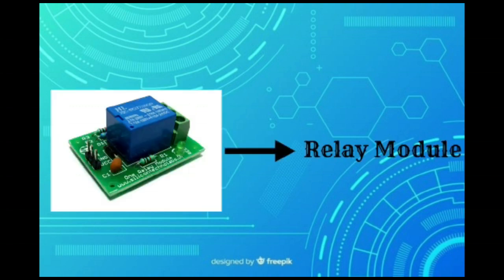Then, relay module. A power relay module is an electrical switch that is operated by an electromagnet. The electromagnet is activated by a separate low power signal from the microcontroller. When activated, the electromagnet pulls to either open or close an electrical circuit.